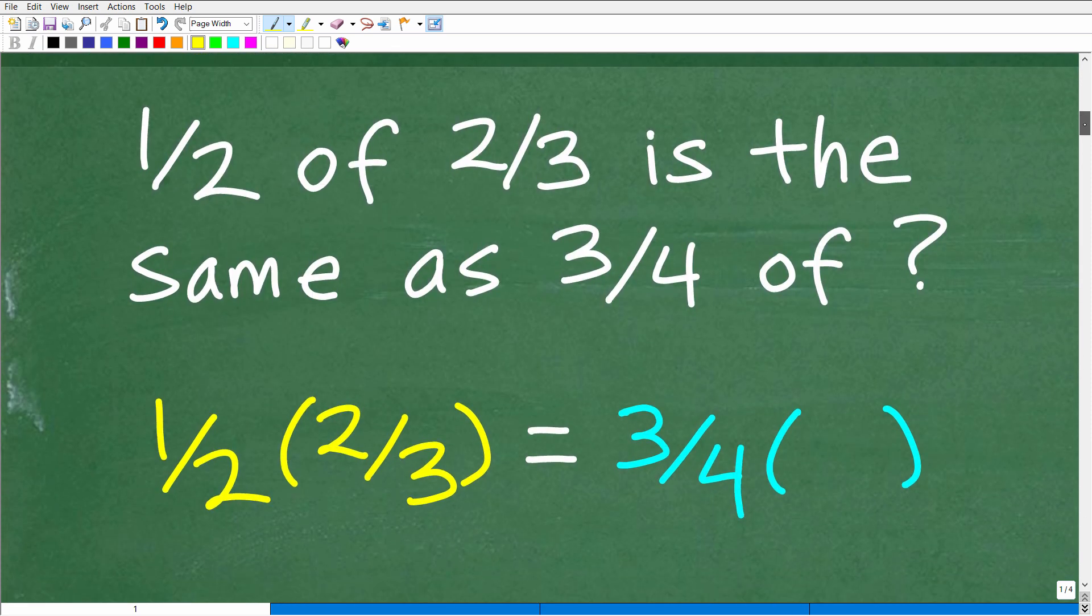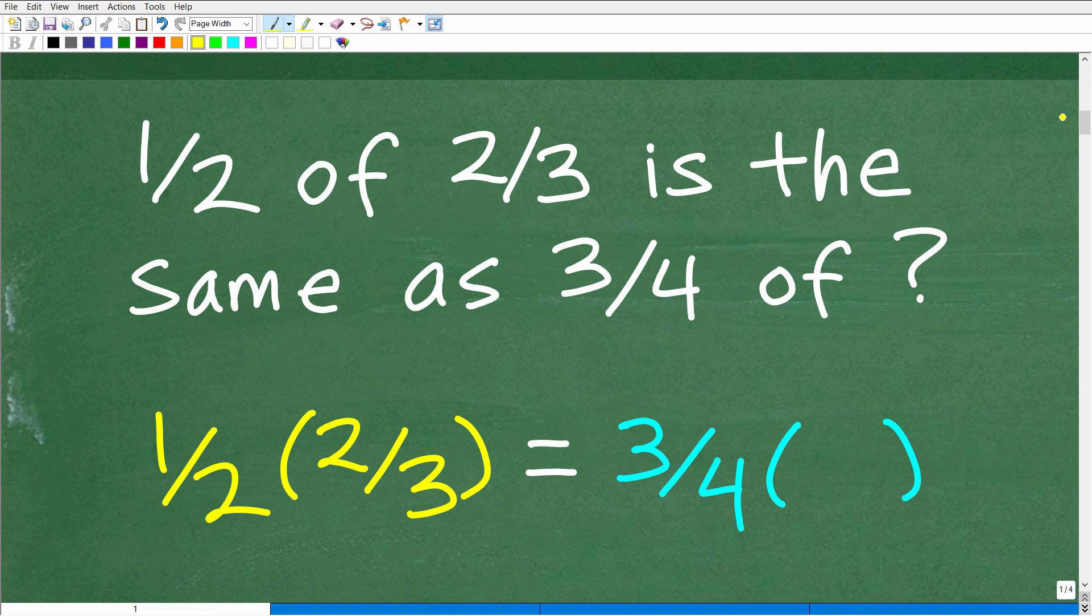Now, okay, so 1 half of 2 thirds is the same as 3 fourths of what? If I said take 1 half of 2 thirds, we have to understand this basic mathematical language right here. So 1 half of 2 thirds, what does that mean? Well, you can see it means multiplication. 1 half of 2 thirds, if we want to find out what 1 half of 2 thirds is, what we have to do is take 1 half and multiply it by 2 thirds, right? So hopefully you understood that.